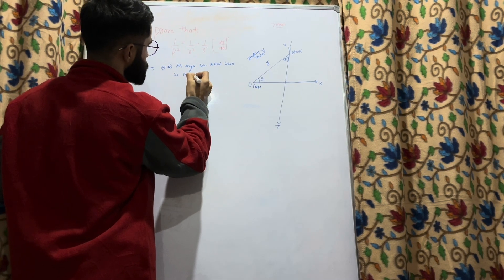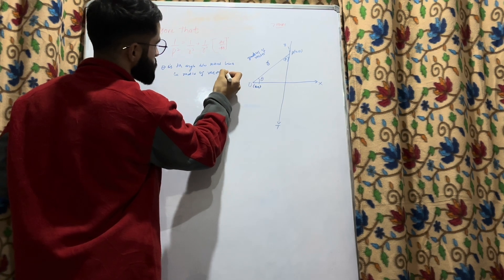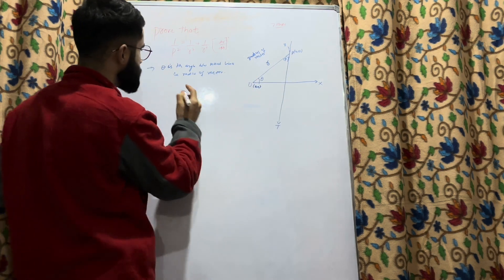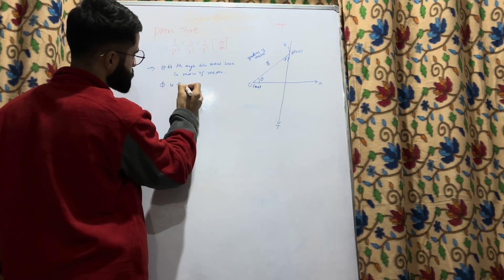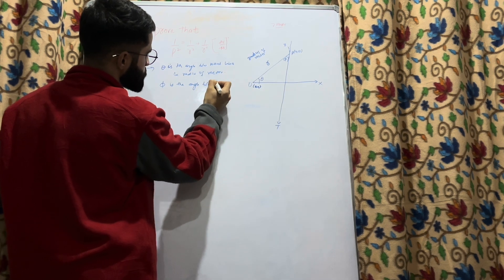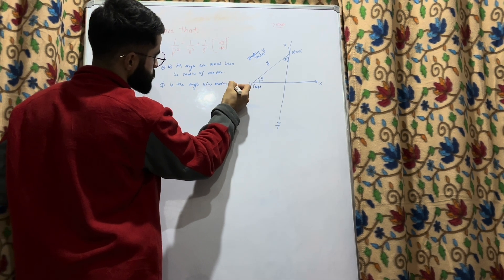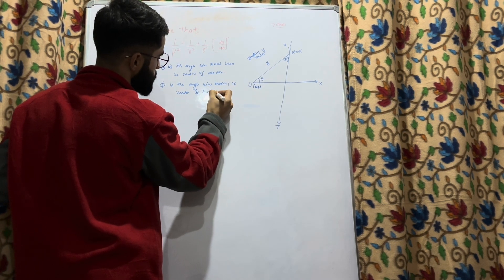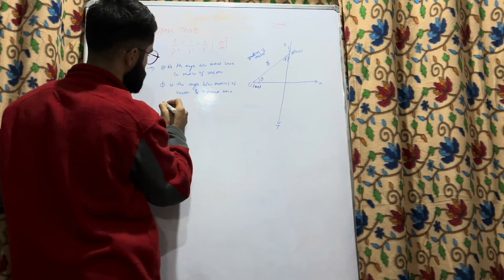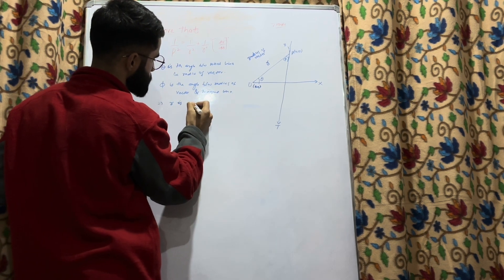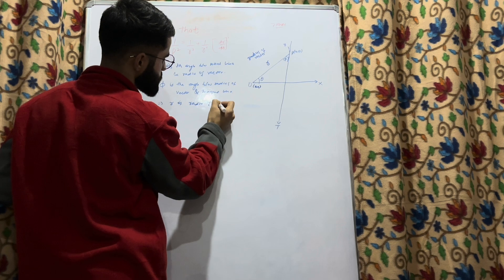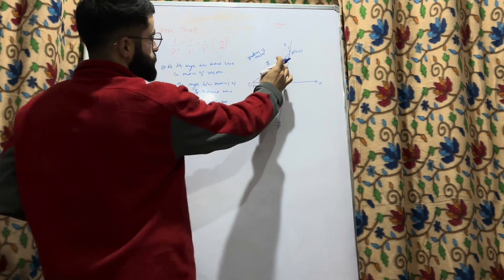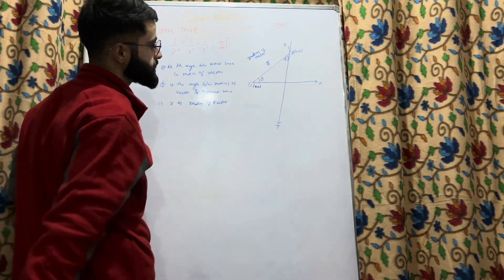And φ is the angle between the radius vector and the tangent line. We draw the tangent line from the polar curve at point P. So φ is the angle between the radius vector and the tangent line, and r is your radius vector.